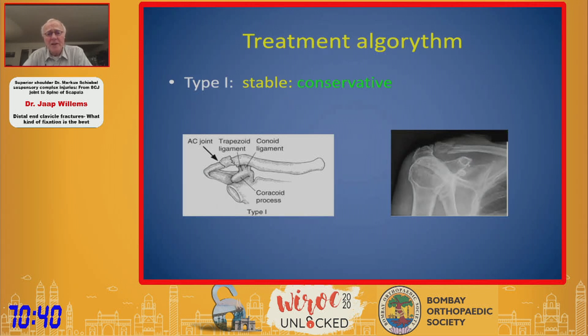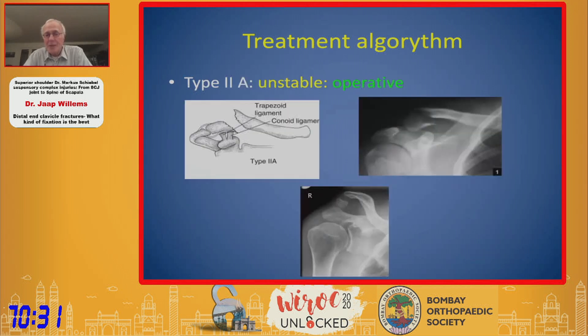What is generally the treatment algorithm? Type 1 is stable and you can leave it alone — it will heal because the ligaments are intact and normally the AC joint is intact as well.